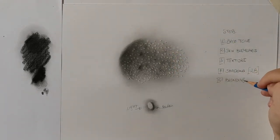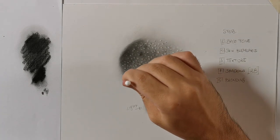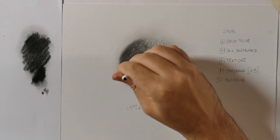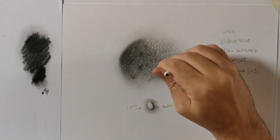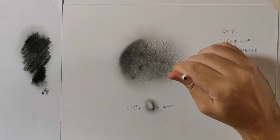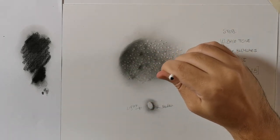Step 5: Blending. Use a Q-tip to blend the shadows. Don't use the same Q-tip that you used to make the skin blemishes. Use a clean one or you'll make a mess. Try to be smooth and soft or you'll make the previous layer disappear.